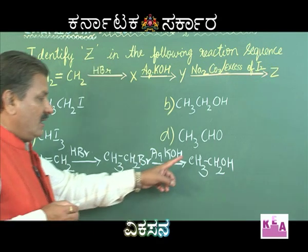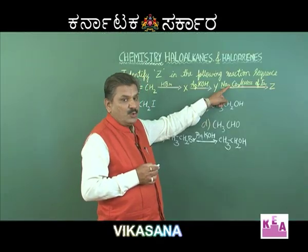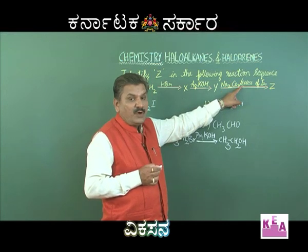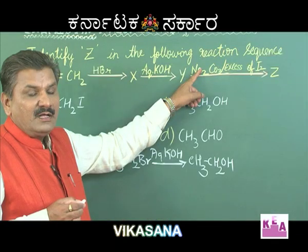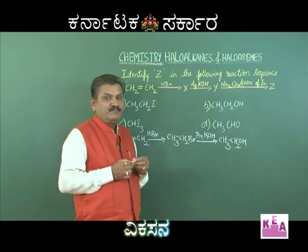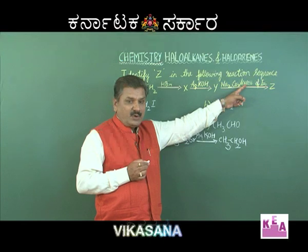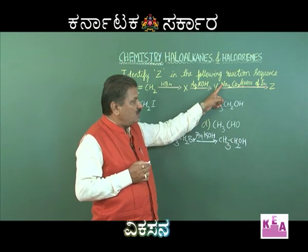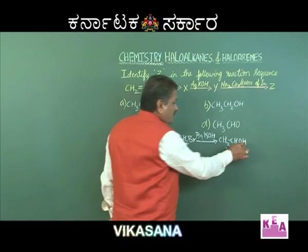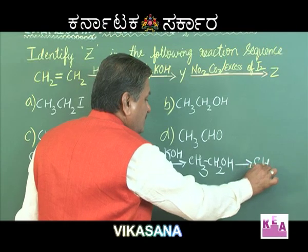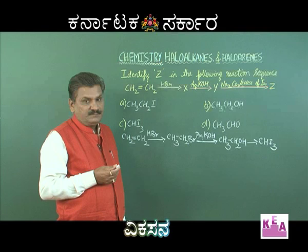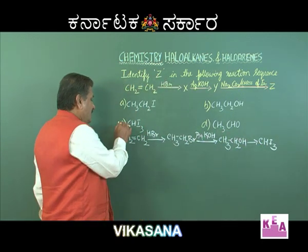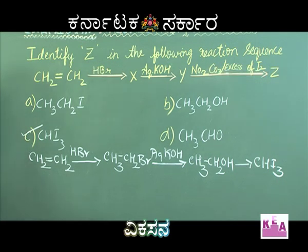CH3CH2OH (Y) then reacts with sodium carbonate and excess iodine — this is the iodoform reaction. An alcohol or carbonyl compound containing a CH3CO— group reacts with alkali and excess iodine to form iodoform (CHI3). Therefore, Z is CHI3, and the correct option is option C.